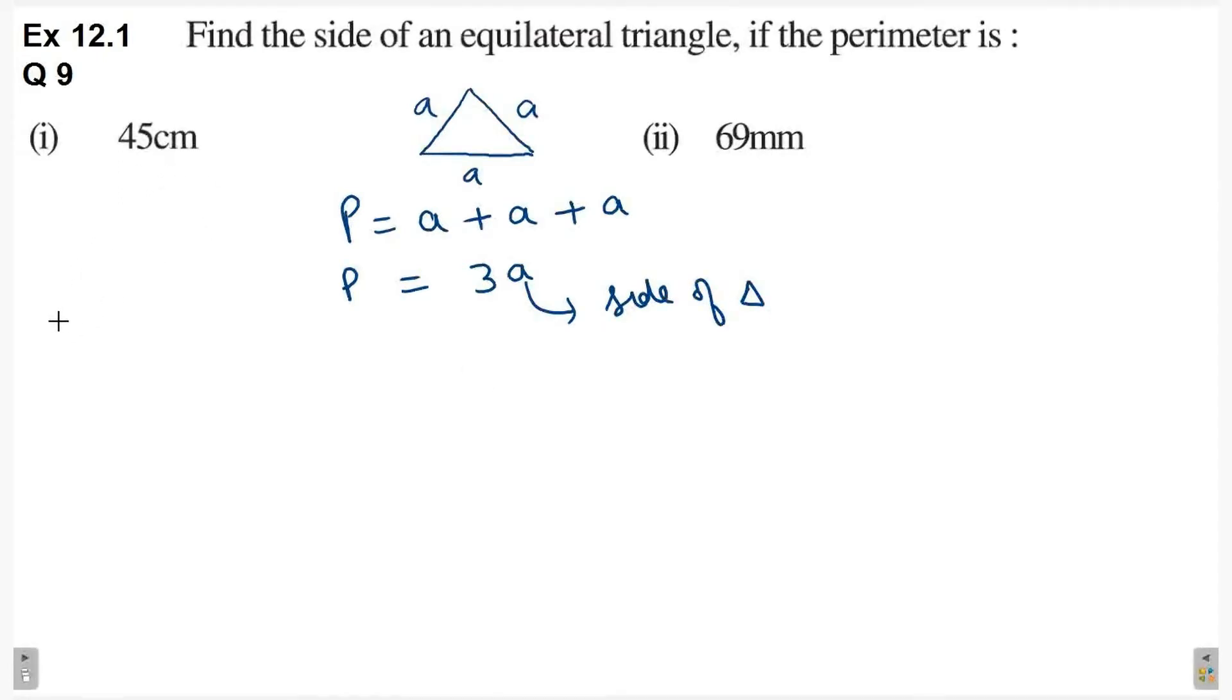First case mein hum kaisa lix sakte hai? Perimeter is equal to 45 cm. P is equal to 3 into side. Values put kar do. 45 is equal to 3 multiply by side. Side kya a jayegi? Side is equal to 45 by 3, which equals 15. Unit of measurement kya laghegi? Centimeter. Side of triangle is equal to 15 cm is the answer.